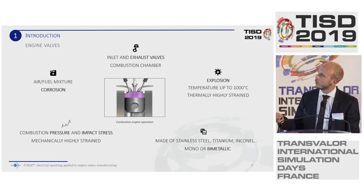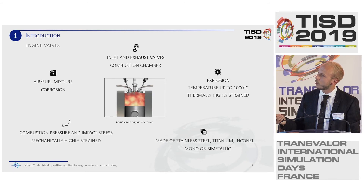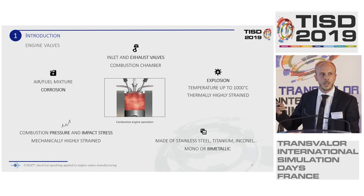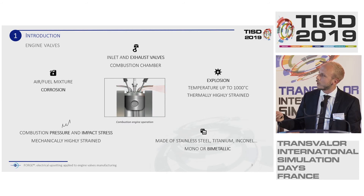The inlet valve is used to administer a mix of air and fuel inside the combustion chamber. Then the piston moves up to compress the gas. We initiate a spark, which generates an explosion. It moves the piston down, which makes the crankshaft rotate. When the piston moves up again, we open the exhaust valve to exit the exhaust gases.